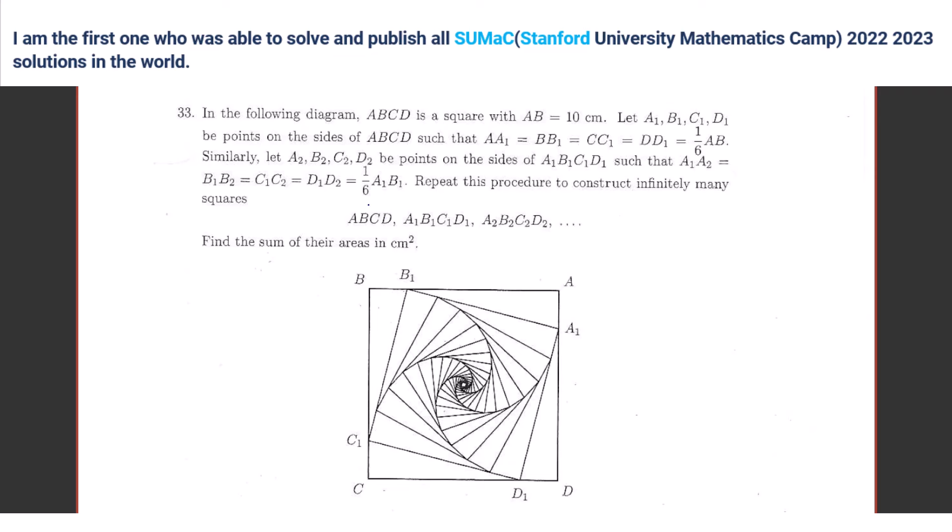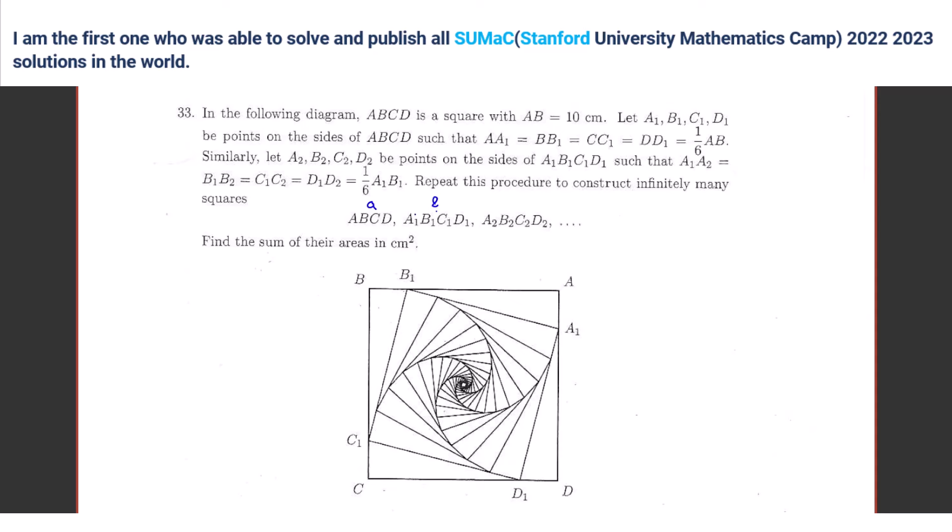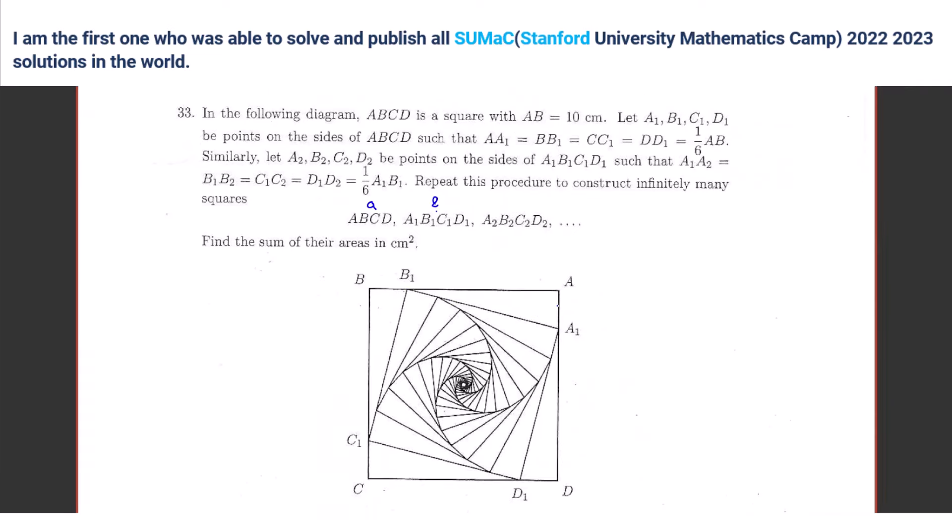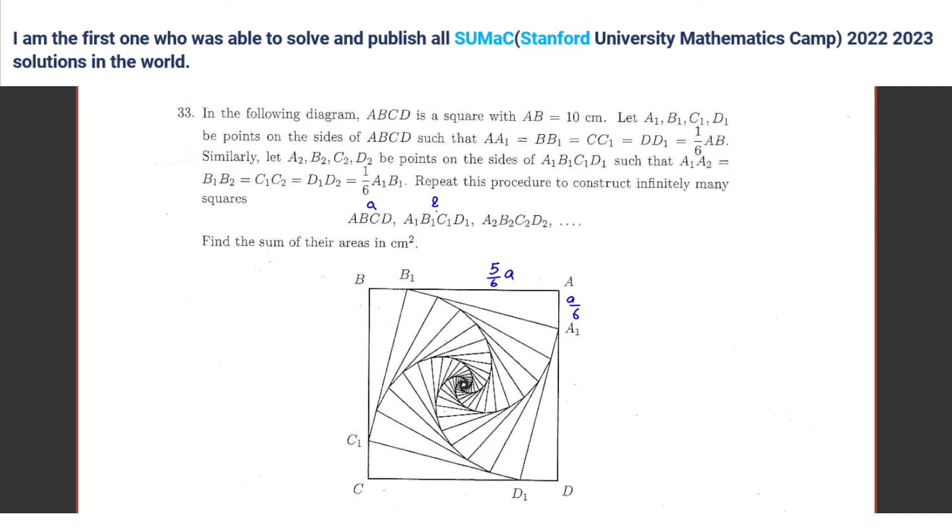Suppose, for example, side length of this is A, which we know is 10, right? Side length of this is what in terms of A? This one, for example, this side length of A1, B1 is what? I think it's like one-sixth of A. This one, AA1 is A over 6. This one is 5 over 6A, so this one is what? Square root 26 over 6A squared.